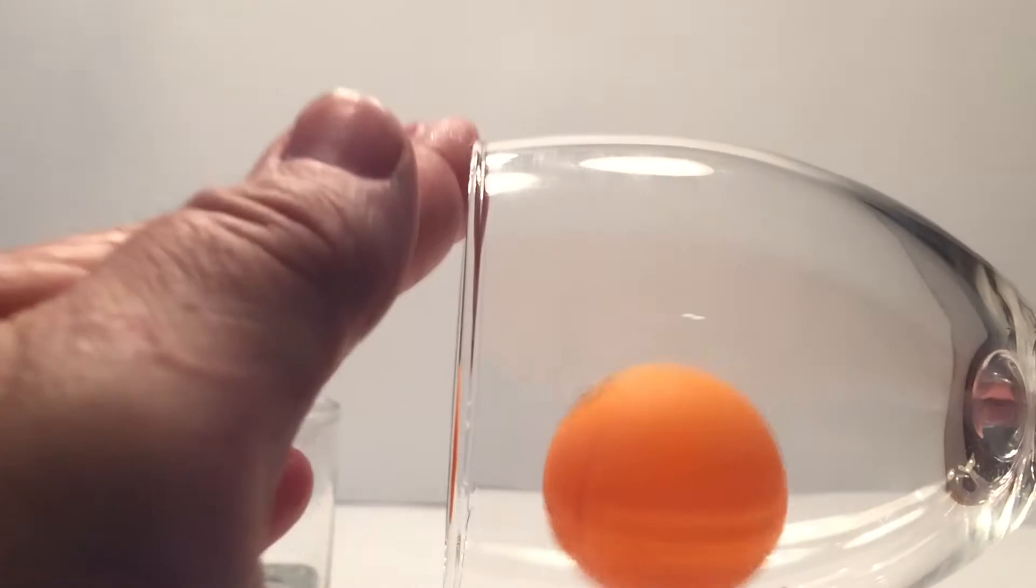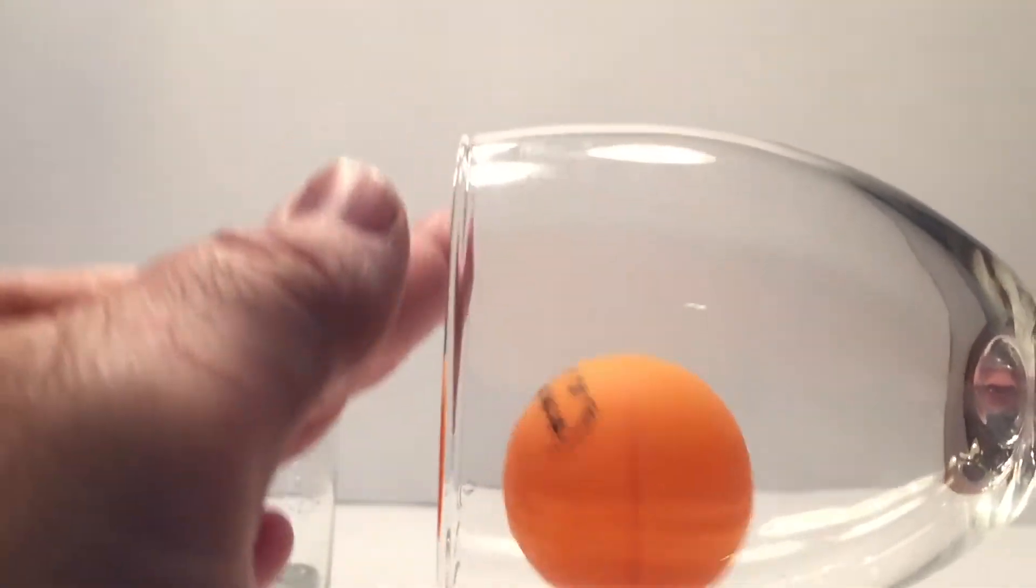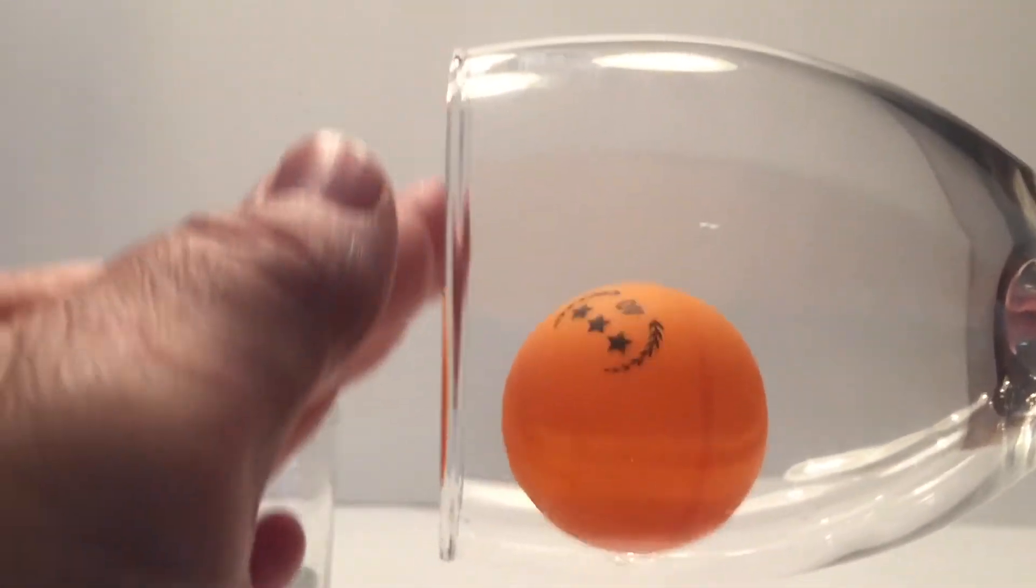For you music lovers, a glass that makes a tone A just above a middle C vibrates back and forth 440 times per second, which is way too fast for us to see.